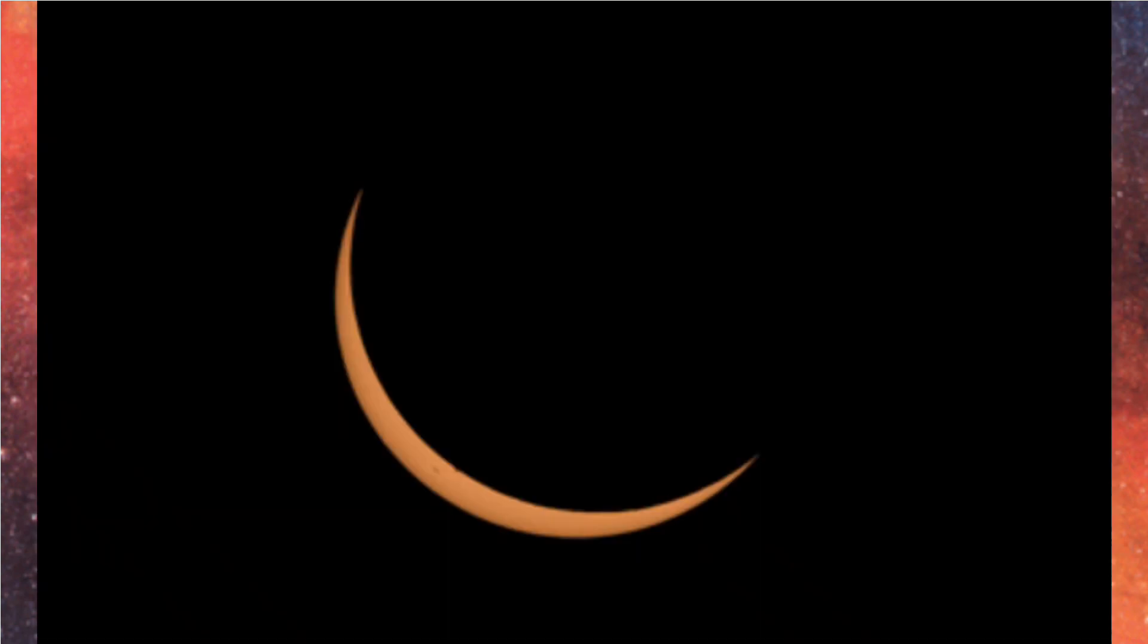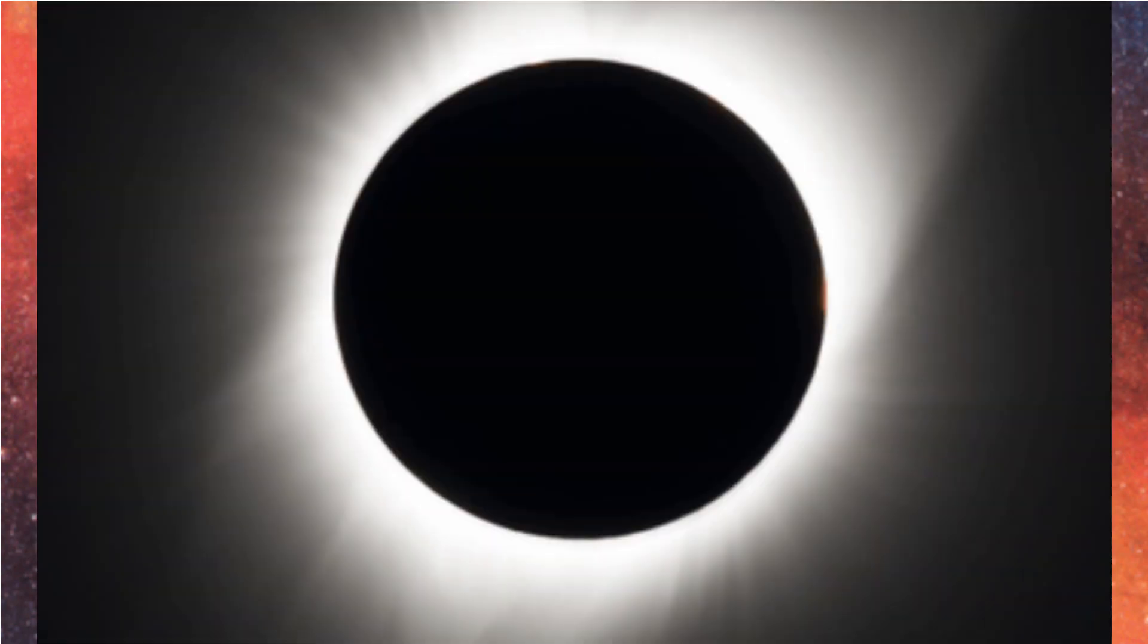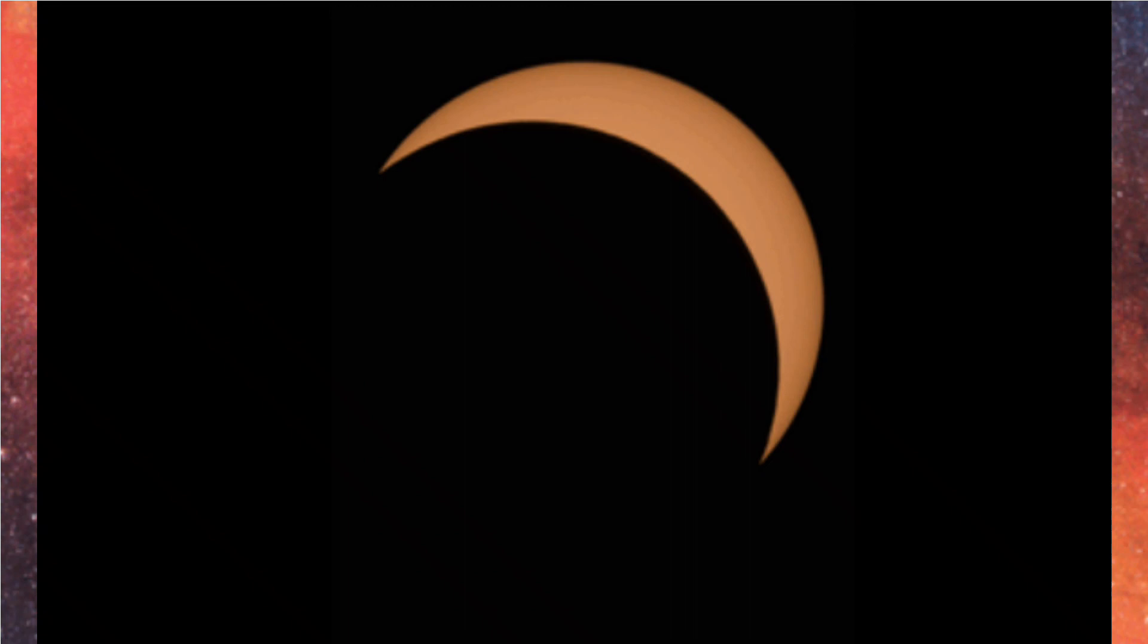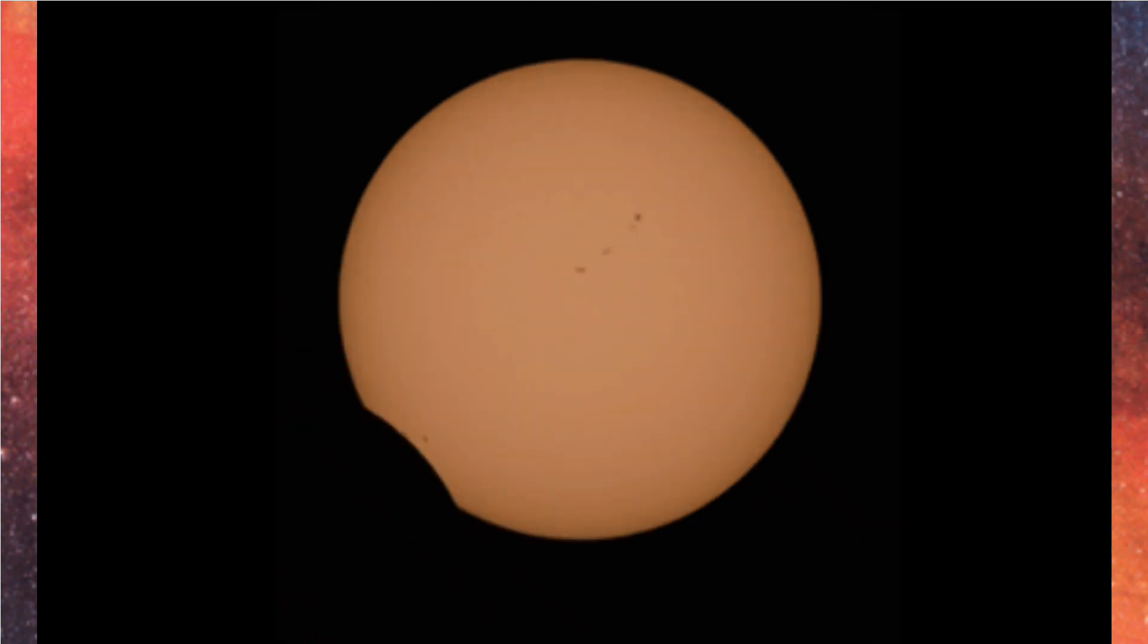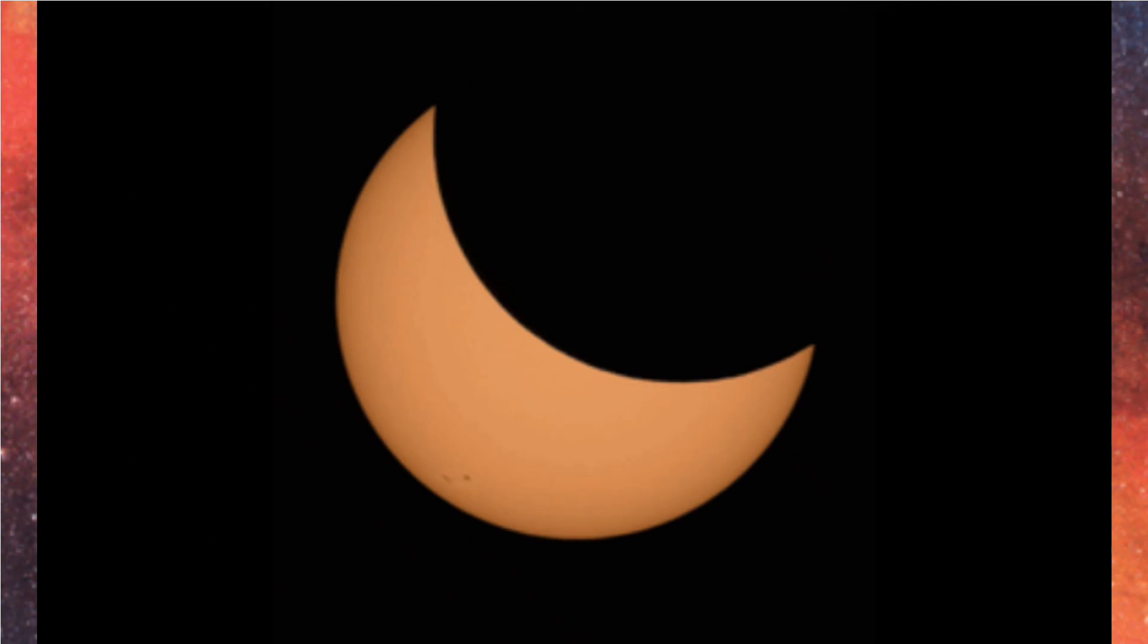We use a special kind of sunglasses to see solar eclipse because we may be blind after seeing a direct solar eclipse. Solar eclipse occurs on a full moon.